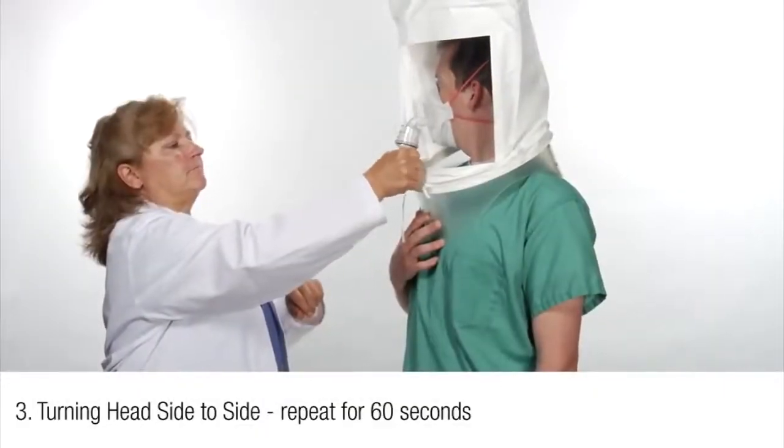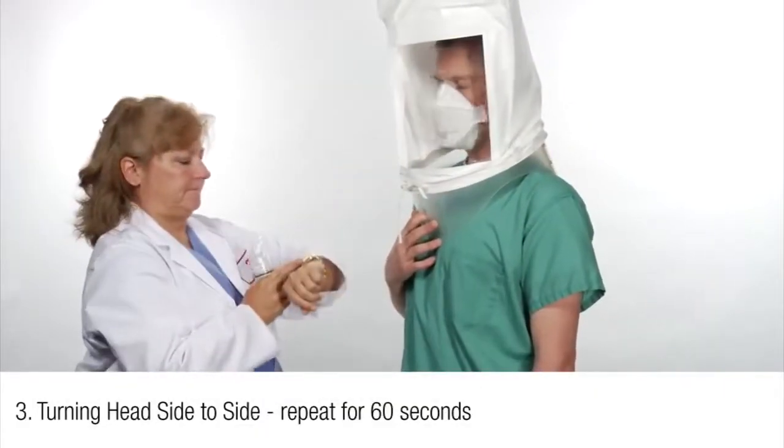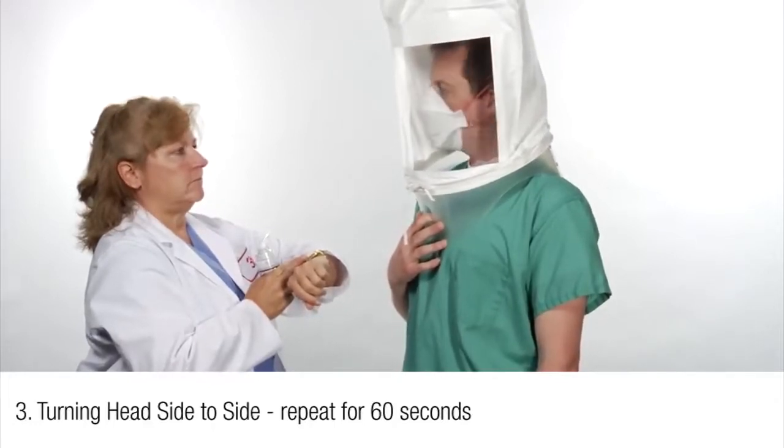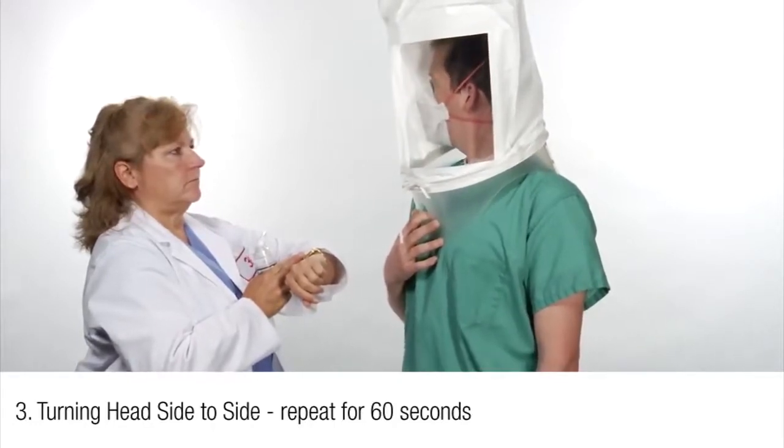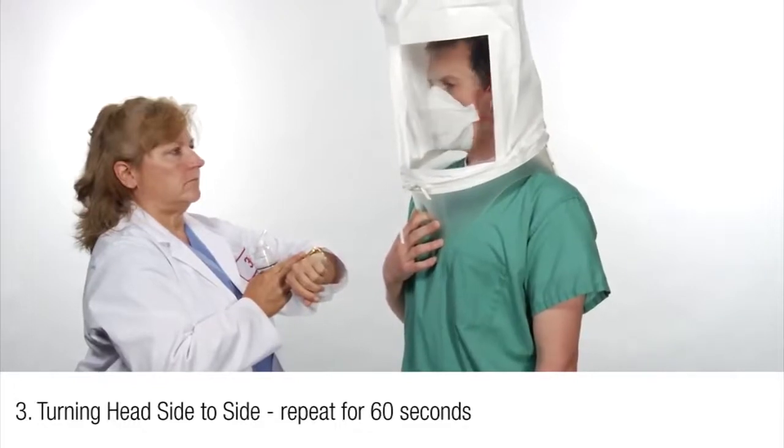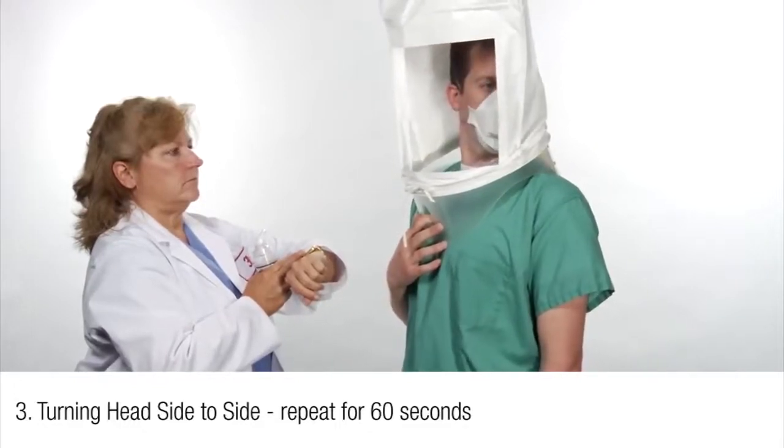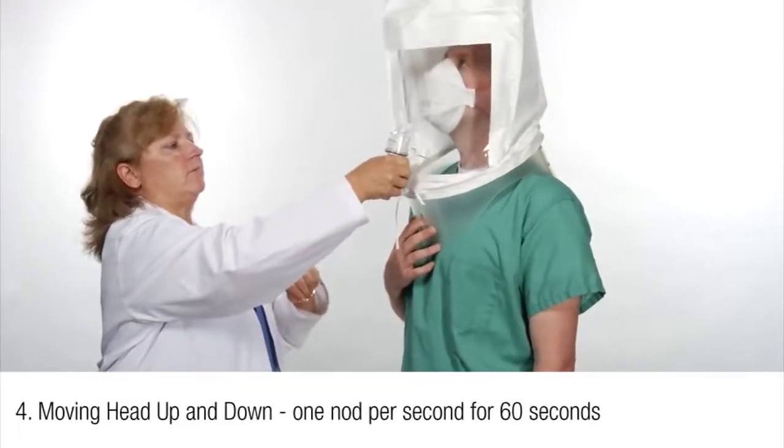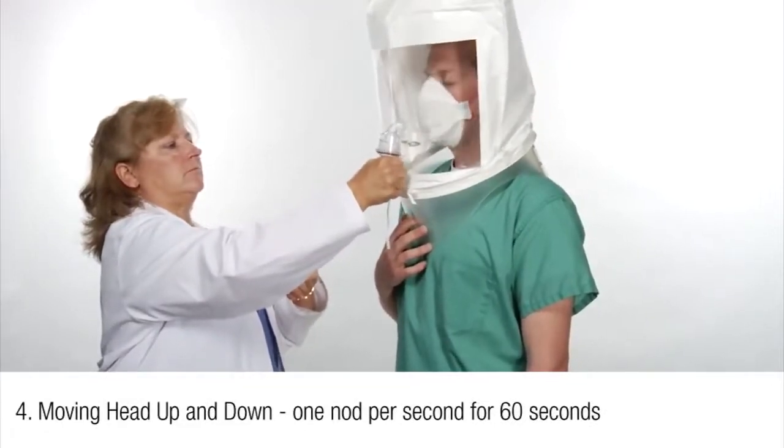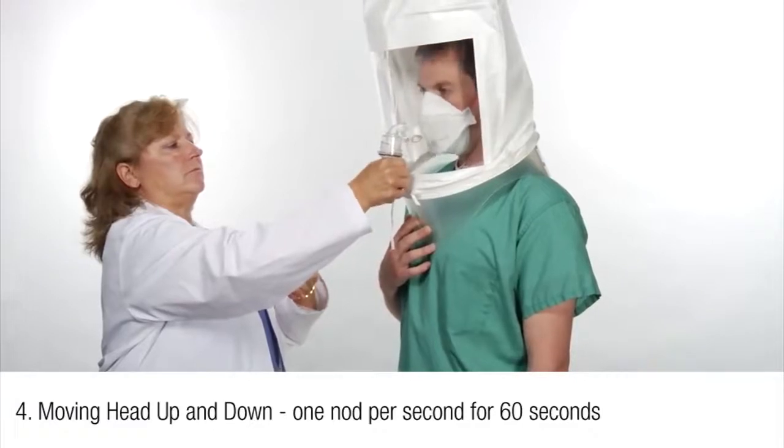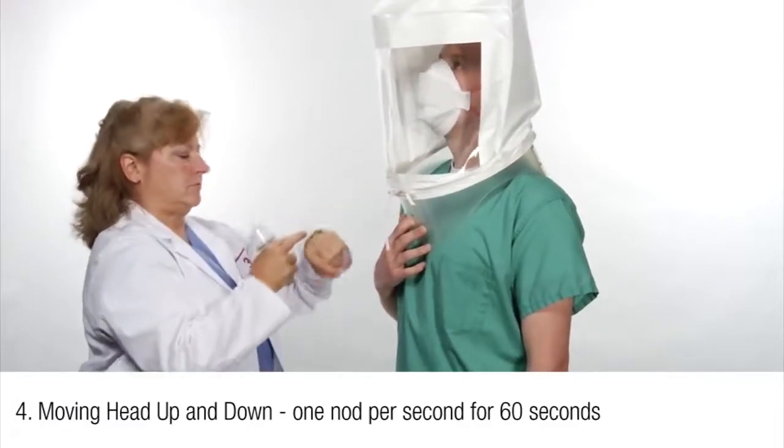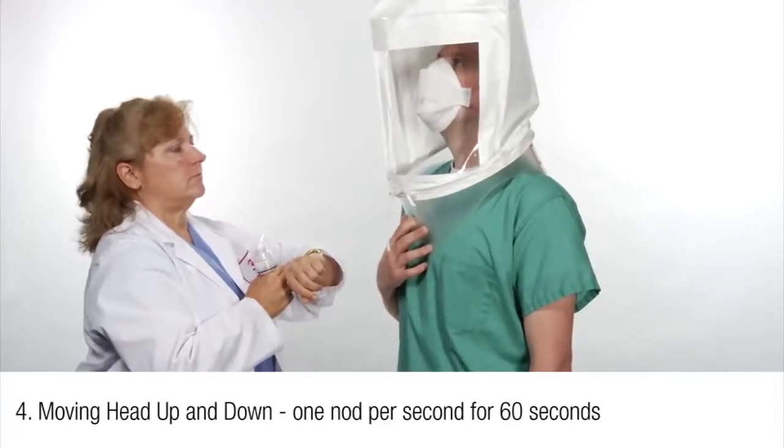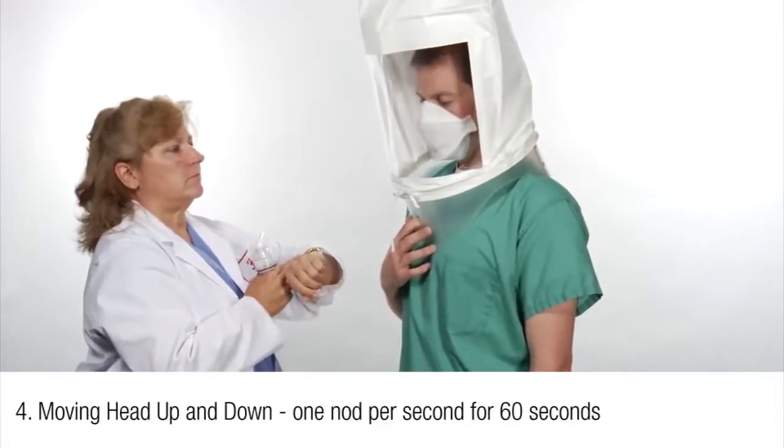Third, standing in place and breathing through their mouth, the subject shall slowly turn their head from side to side between the extreme positions on each side, pausing momentarily to inhale at each side. Repeat for 60 seconds. Fourth, standing in place and breathing through their mouth, the subject shall slowly nod their head up and down with about one nod per second for 60 seconds. Instruct the subject to inhale in the up position when they are looking toward the ceiling.